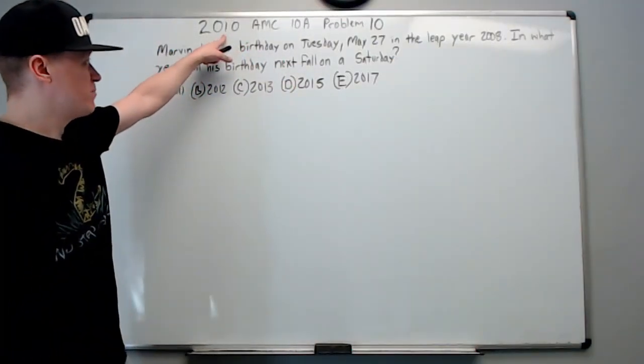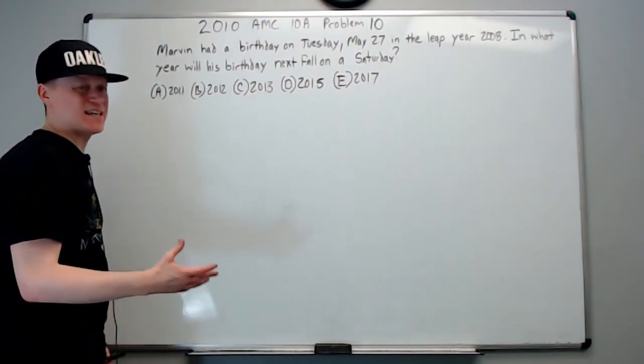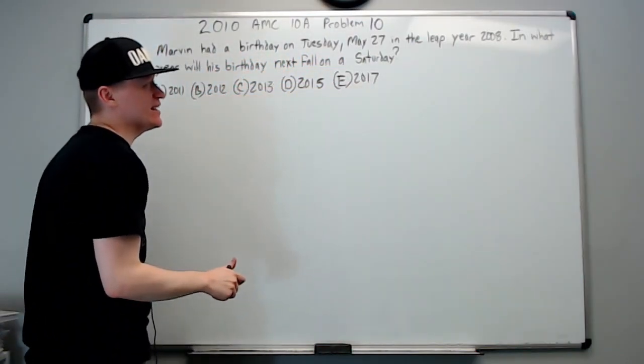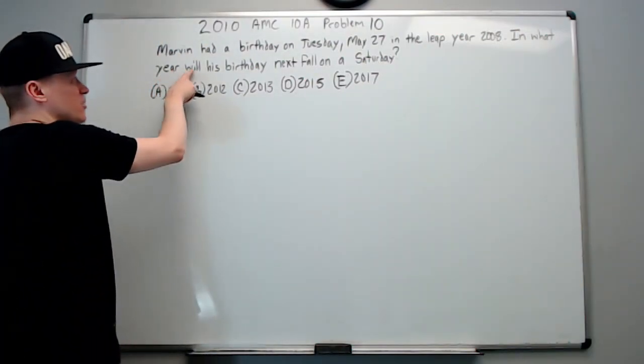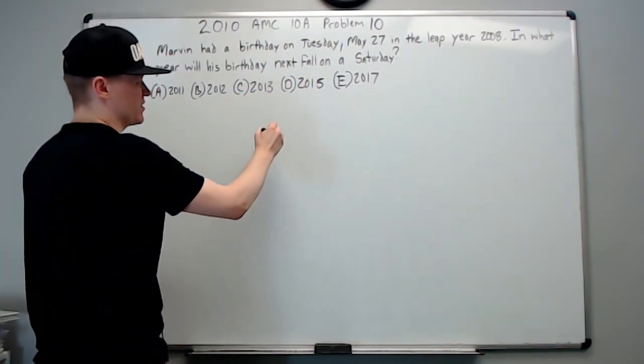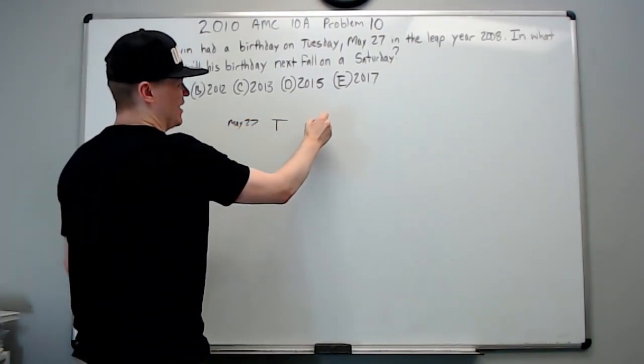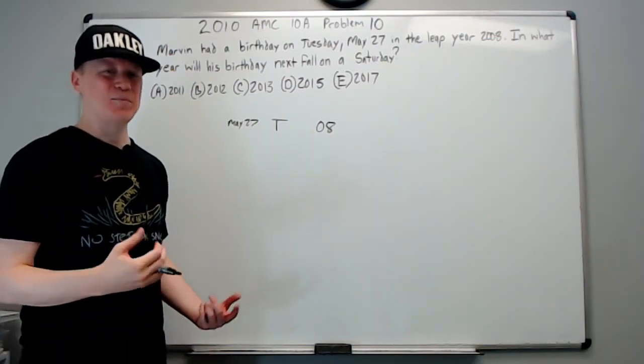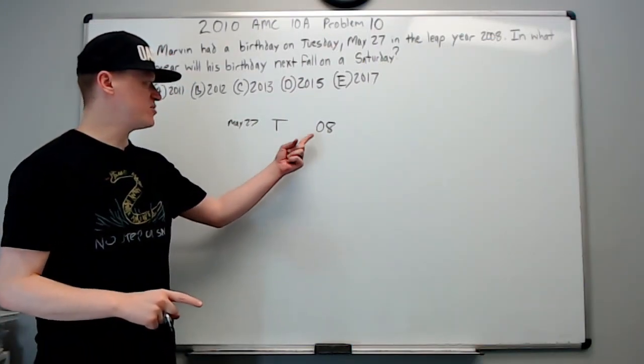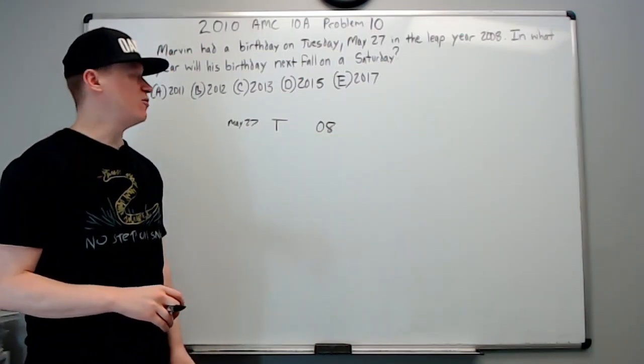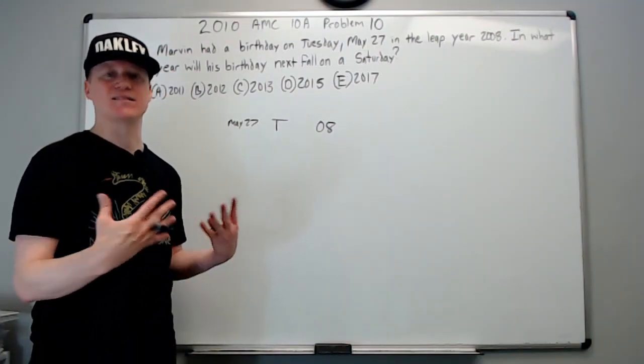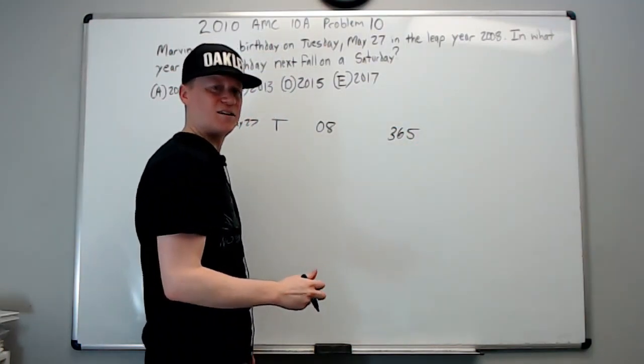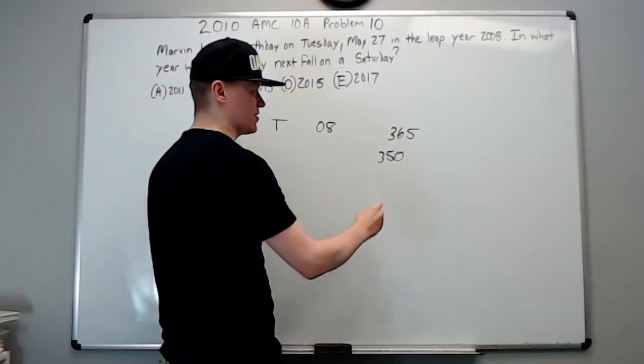This is the AMC 10A from 2010, problem number 10. Marvin had a birthday on Tuesday, May 27th in the leap year 2008. In what year will his birthday next fall on a Saturday? You need some background knowledge. Every year that you go forward, it's going to advance one day from the previous year. If you go forward four years, it's going to advance five days because there's a leap year somewhere in every four year period.